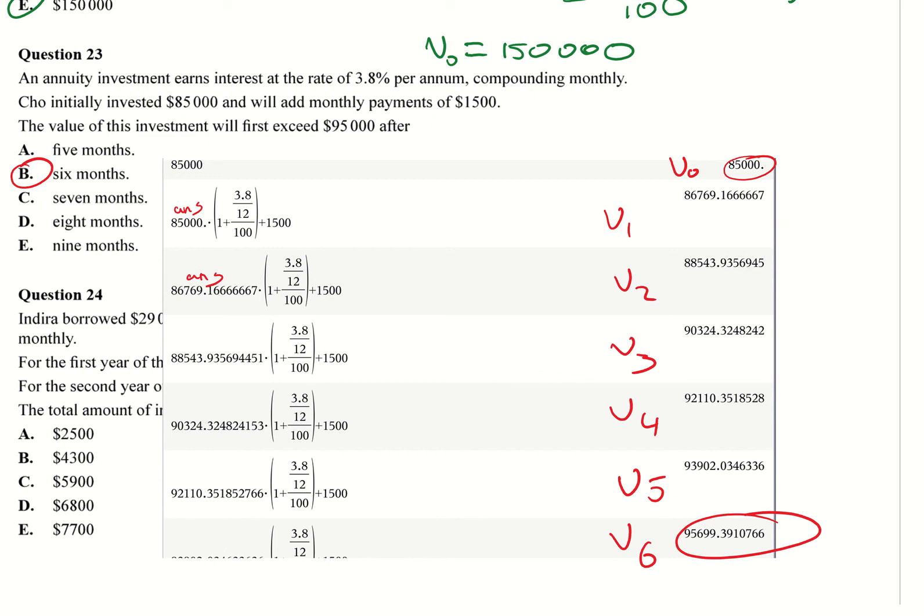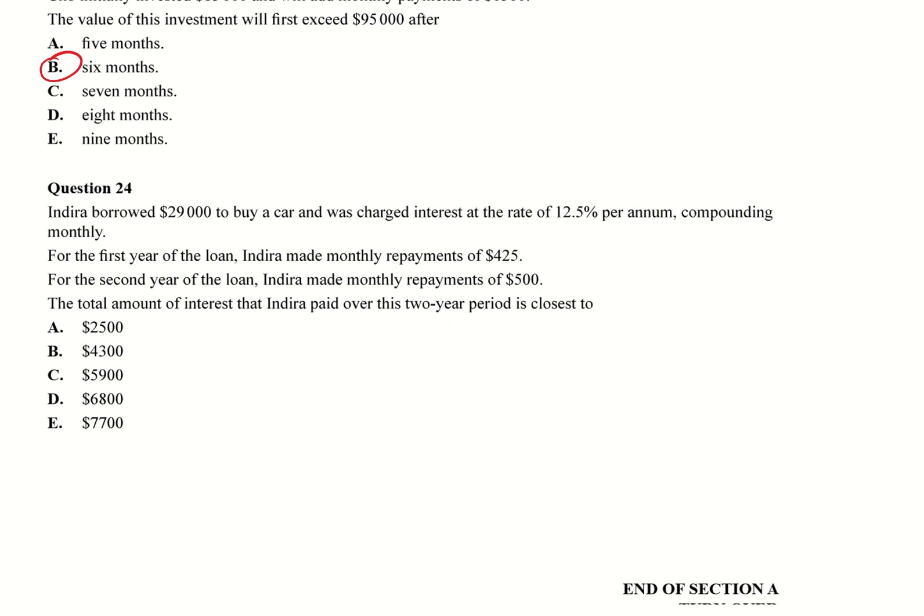Okay, in this one, Indira borrowed $29,000 to buy a car and was charged interest at the rate of 12.5% per annum. So our r is there, compounding monthly, PPY equals 12. For the first year of the loan, she made monthly repayments of $425. So that's our payment for the first year. And this is our payment for the second year. So I'm going to call it year one, year two. Keep in mind, at the moment, this is how much she paid for a year. So if I do that, that's how much she paid that year. And in that second, how much she paid that year. If I work out those two numbers and add them together, that's going to equal $11,180. That's just how much she paid into the bank.